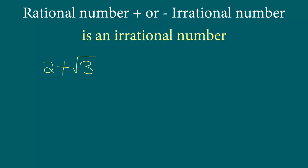We are going to use the method of contradiction, like the way we did it in the previous video. So we are going to assume that this is a rational number — we assume the opposite and prove our assumption is wrong. So let's say 2 plus square root 3 — I have randomly written one rational number and one irrational number.